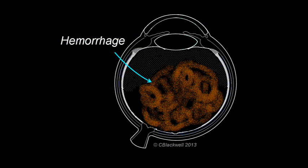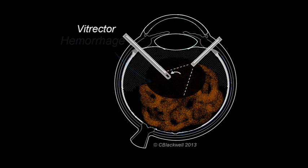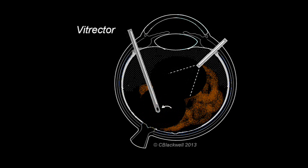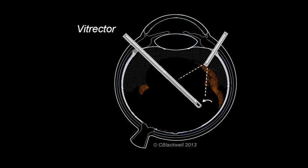We started by discussing vitreous hemorrhage as the motivation for developing vitrectomy surgery. Here we can see the vitrector clearing out the vitreous and the hemorrhage with it. That not only restores vision for the patient, but it allows a view in for the retina specialist.